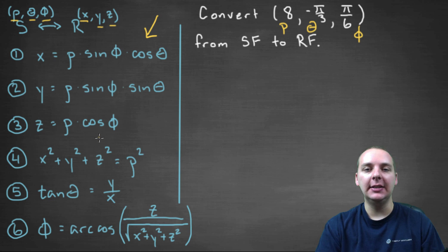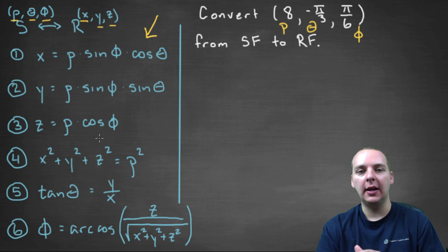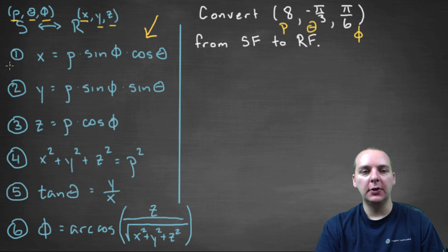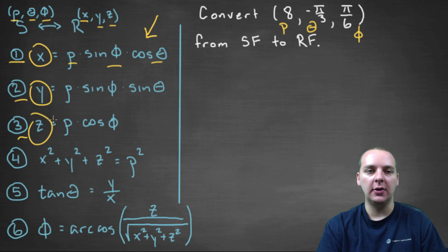Now it turns out this is a lot easier than converting from rectangular back to spherical, because look at the first three conversions, they're going to be perfect, they're exactly what we need. We have rho, theta, and phi, and so these three, first three conversions will immediately give you x, y, and z when you plug those values in.